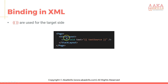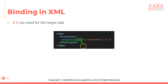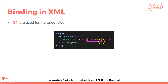Binding in XML is achieved by double curly braces. In this code, we have a page with a layout — in our case a tab — and inside it a text field. We want to make a binding on the text property, so we say text equals two opening curly braces, two closing curly braces, and inside we put textSource.